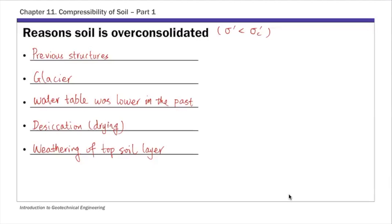So all of these factors essentially are basically removing loads from clays. So that's why the clays had larger effective stress in the past, and that by definition is overconsolidated. These are some common reasons why clays may become overconsolidated.